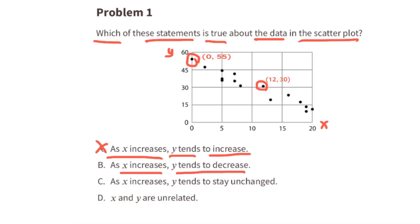Option B: as x increases, y tends to decrease. Yes, that is true. We just proved that. Option C: as x increases, y tends to stay unchanged. Well, we know that's not true. And finally option D: x and y are unrelated. That's not true either, because you can see that the points on this graph go down as the value for x increases.